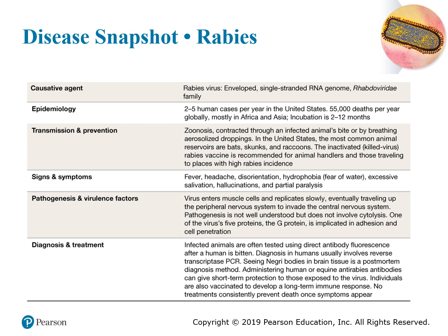Rabies is transmitted through an animal bite from an infected animal or through breathing in aerosol droplets. In the US, the most common reservoirs are bats, skunks, and raccoons. These animals can infect pets, and you can then become infected from your pets as well. Signs and symptoms include fever, headache, and disorientation.